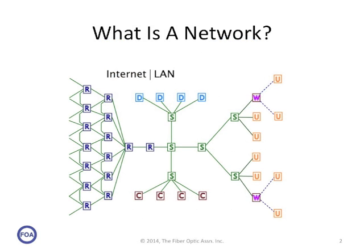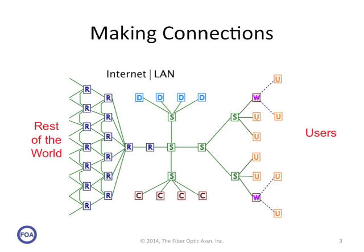What is a network? This mess of symbols and lines is a schematic of a network. On the right side we have the users, the U symbol. Users can be many types of devices: laptops, tablets, smartphones, IP cameras, building security or management systems, and the like. On the left, we have the rest of the world connected on the internet. Let's look at how they connect.